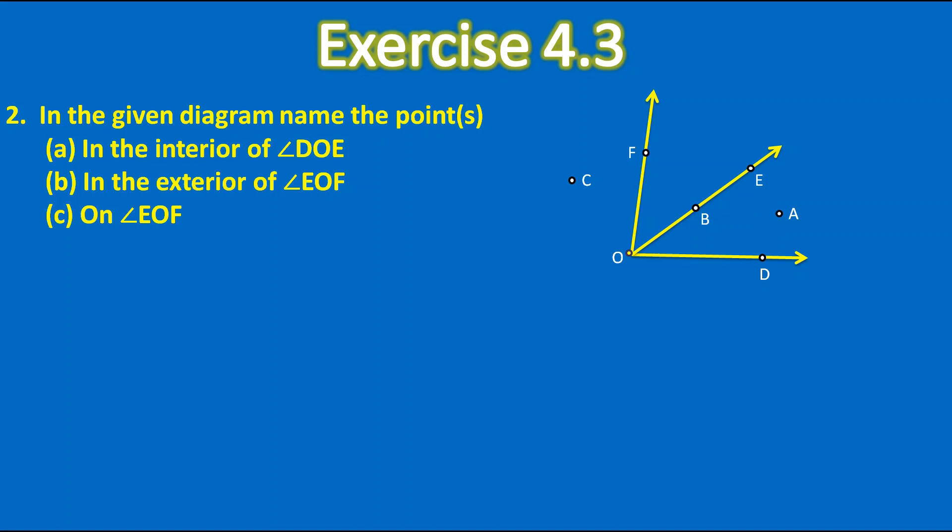Link is there in the description as well as here I have mentioned the card. You can click on that you will go directly to that video. Now here they have given the first is in the interior of angle DOE. So here the angle DOE is this one DOE. So what they have told we have to write the name of the point which is present interior means it should present inside. So here only one point is present that is A.